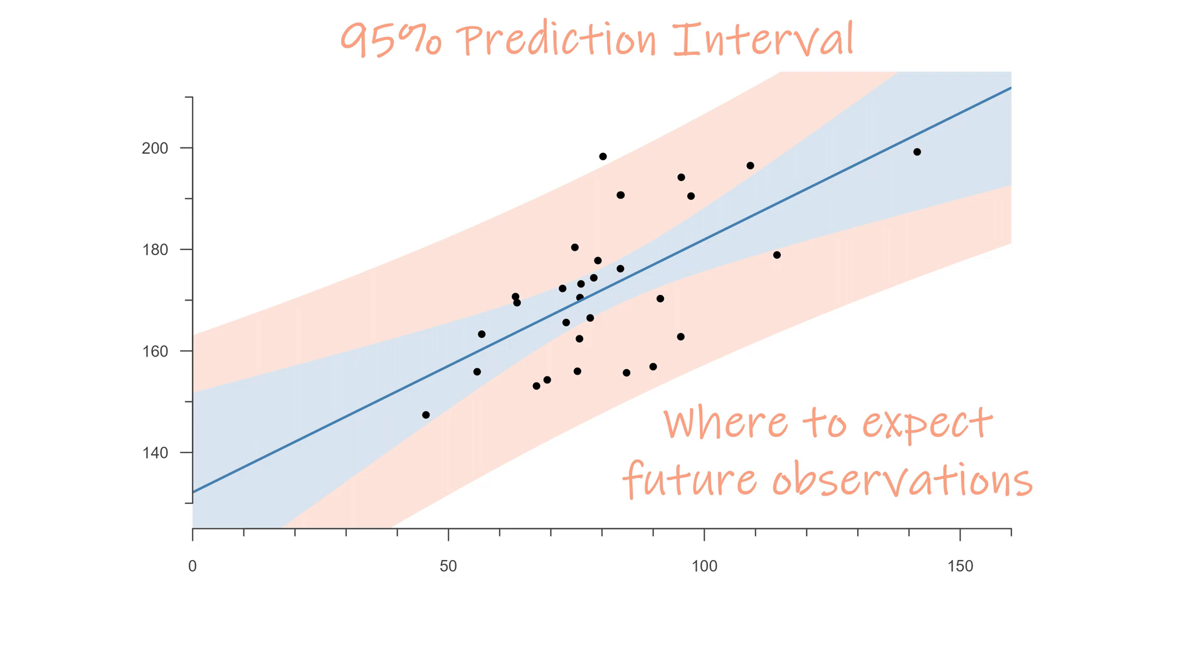A prediction interval is always wider than a confidence interval because it includes both the variance between individuals and the uncertainty in the estimated relationship.